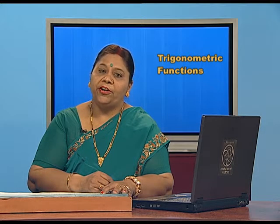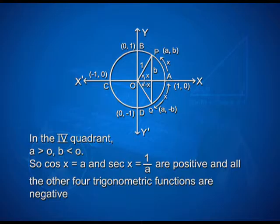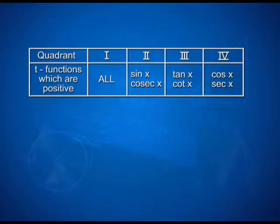Similarly, in the fourth quadrant, A > 0 and B < 0, so cos x = A and sec x = 1/A are positive and all the other four trigonometric functions are negative. This can be summarized in a table: in the first quadrant all functions are positive; in the second quadrant sin x and cosec x are positive; in the third quadrant tan x and cot x are positive; in the fourth quadrant cos x and sec x are positive.